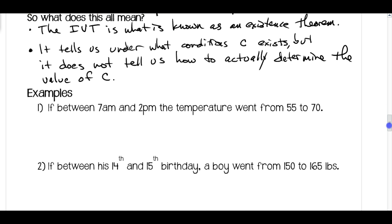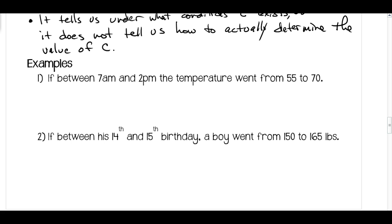A couple of real-world type examples of this. If between 7 a.m. and 2 p.m. the temperature went from 55 degrees to 70 degrees, by the Intermediate Value Theorem, we could conclude that at some time, the temperature reached, say, 62 degrees. This is just an arbitrary value of 62 degrees. And we also know time is continuous. At least in our dimension, time is continuous.